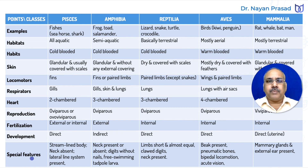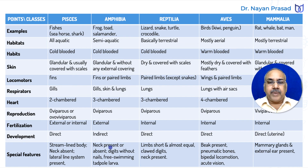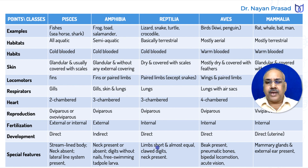Now the special features of these different groups: in fishes, the body is streamlined to reduce the resistance of water during swimming. Neck is absent and a lateral line system is present. In amphibians, neck is present or absent, but the digits are without nails, and a free-swimming larval stage called tadpole larva is seen. In reptiles, limbs are short and almost equal — that is why they are creeping animals — and they have clawed digits with pointed nails.